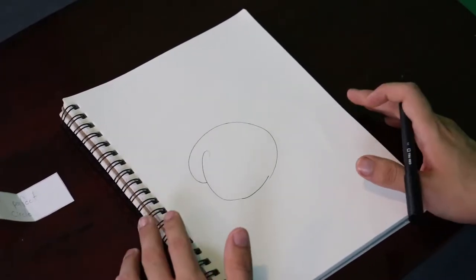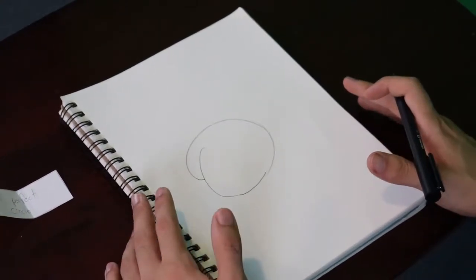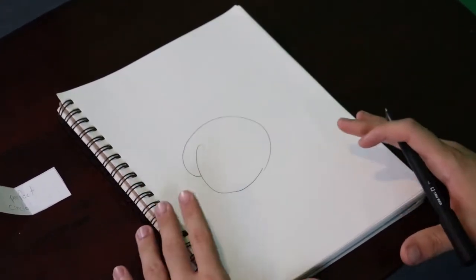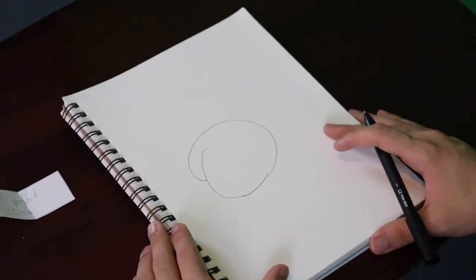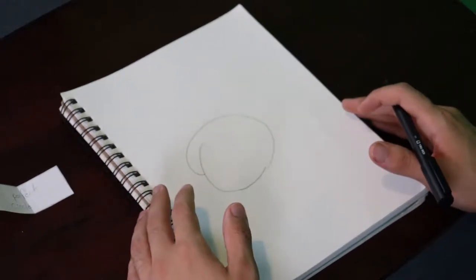I think there's a message here. It's that nothing's really perfect. Everything has imperfections, like my circle right here. This isn't a perfect circle. This is even better. This is a real circle.